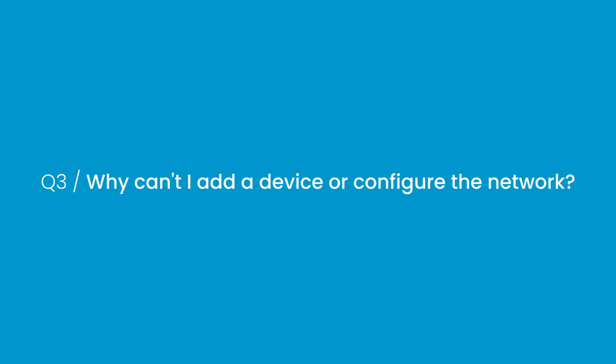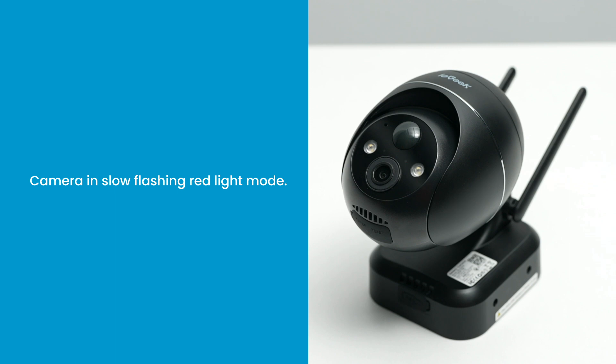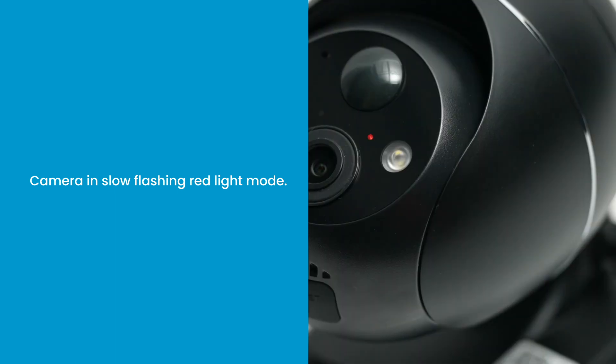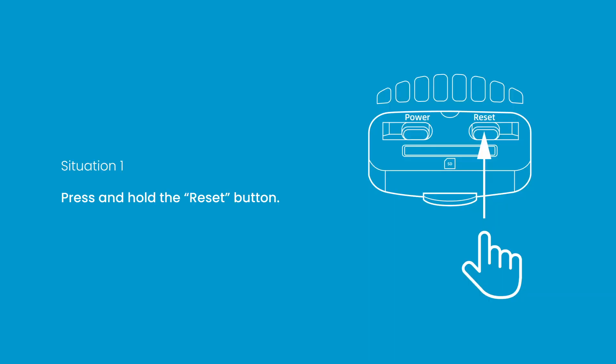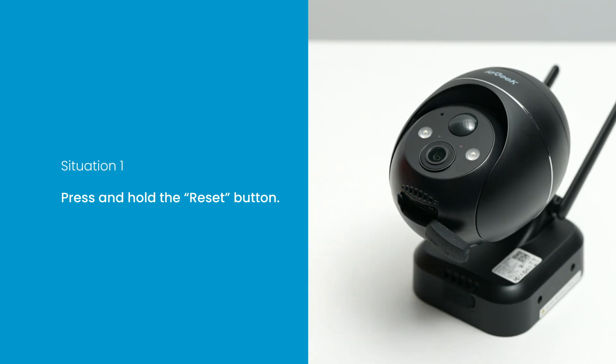Question 3: Why can't I add a device or configure the network? Top Tip: Based on the status of the device indicator light, you can determine the reason for network configuration failure and the corresponding solution. Before adding the device, ensure that it is in slow flashing red light mode — one flash per second. Situation 1: If the indicator light status is abnormal, please reset the device to factory settings. Press and hold the reset button until you hear a beep sound, then release it.